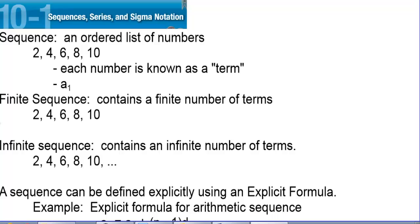A sequence is an ordered list of numbers, like 2, 4, 6, 8, 10. Each number is known as a term. In this case, a sub 1 would be 2, a sub 2, the second term, would be 4, a sub 3 is 6, and so on.